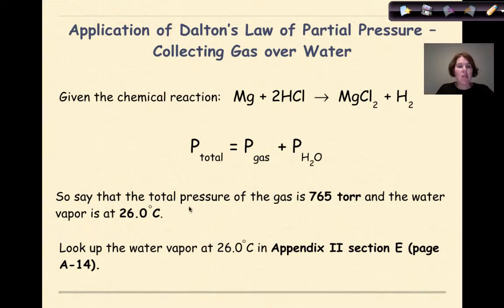So say that the total pressure of the gas inside the eudiometer is 765 torr, and the water vapor is at 26 degrees Celsius. What you would do is go to your textbook, and you'd go to Appendix 2, Section E, on page A14, and you look up the water vapor at 26 degrees Celsius. And for the sake of time right now, I'm going to tell you that if we look that up, our pressure will be 25.21 torr.